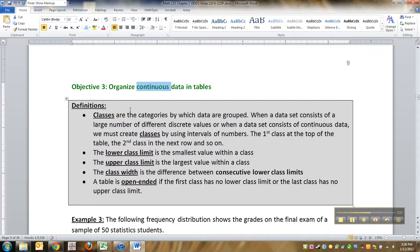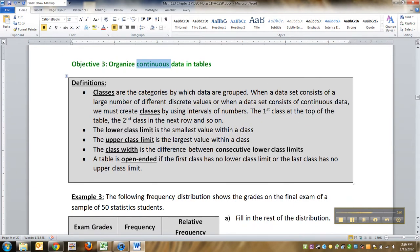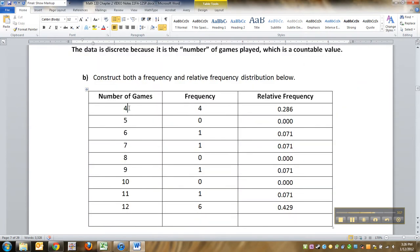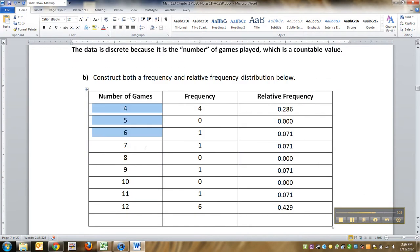So continuous data, we're going to have to have a whole bunch of definitions here. There's classes. Classes are the categories by which the data are grouped. When data consists of a large number of different discrete values, or when a data set consists of continuous data, we must create classes by using intervals of numbers. The first class at the top, second class, and so on. Back here, you don't need a class because there were so few numbers. You could start at four and reasonably make your way up to the top of 12.